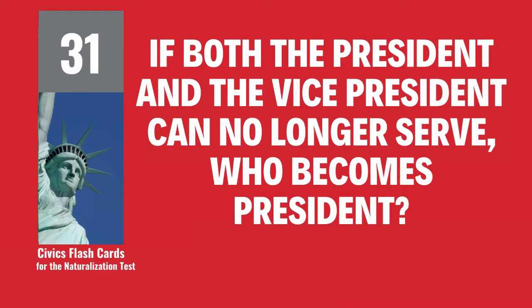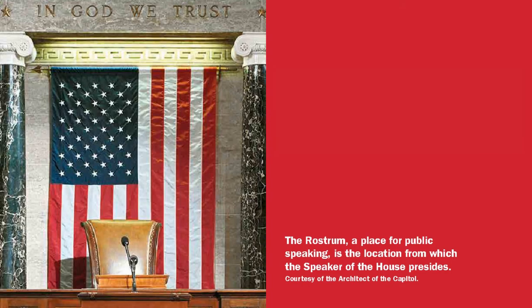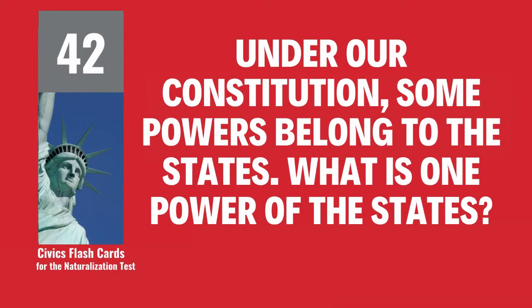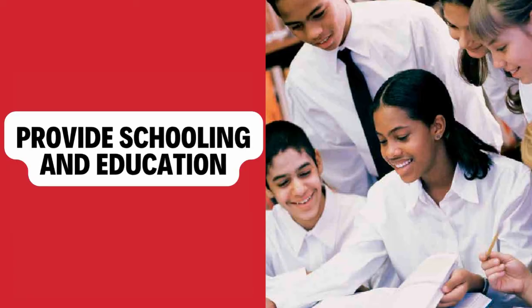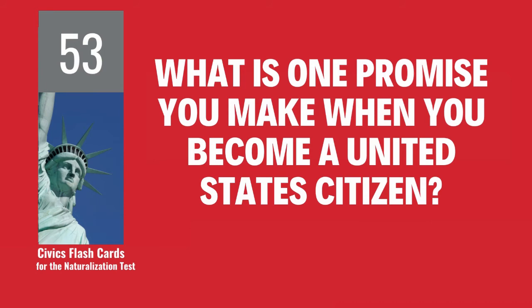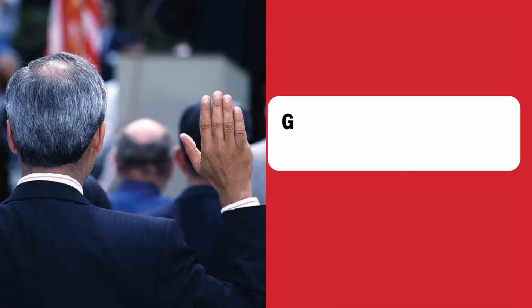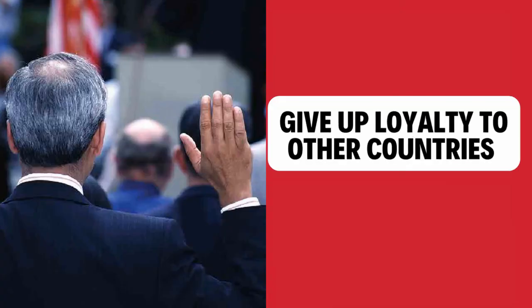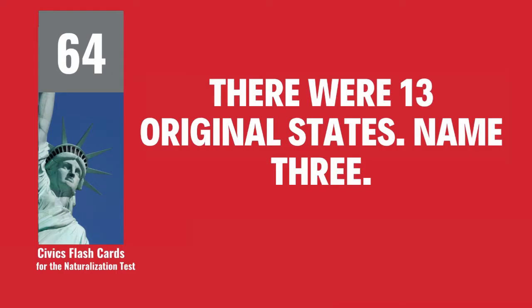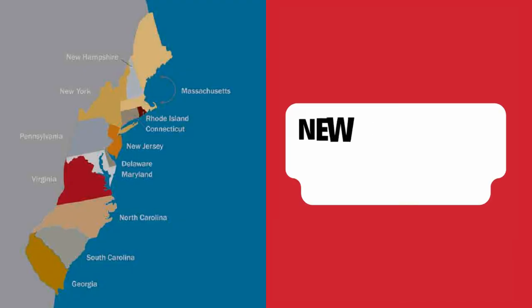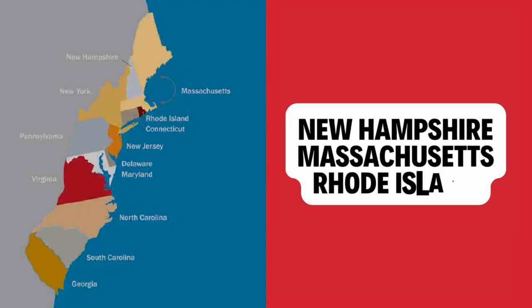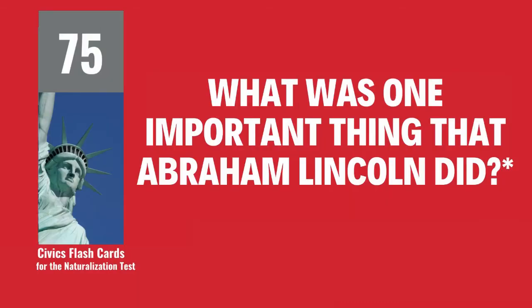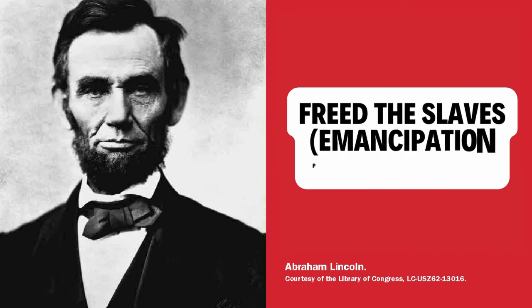If both the President and the Vice President can no longer serve, who becomes President? The Speaker of the House. Under our Constitution, some powers belong to the states. What is one power of the states? Provide schooling and education. What is one promise you make when you become a United States citizen? Give up loyalty to other countries. There were 13 original states. Name three. New Hampshire, Massachusetts, Rhode Island. What was one important thing that Abraham Lincoln did? Freed the Slaves — Emancipation Proclamation.